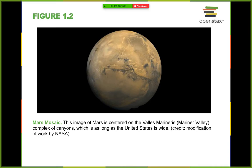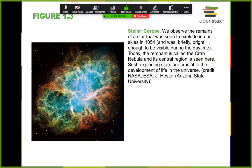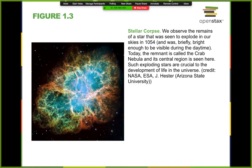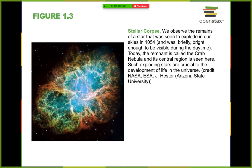In our solar system — our backyard — we have planets like Mars. Mars has several geological features: mountains, craters, lava flows, and evidence of ancient water flow, though it's all dry now. Mars is just one plate, unlike Earth with its active plate tectonics. Here's a picture representing an expanding gas shell coming out of an exploding star — this is a stellar corpse, the result of a star that exploded, which we call a supernova.